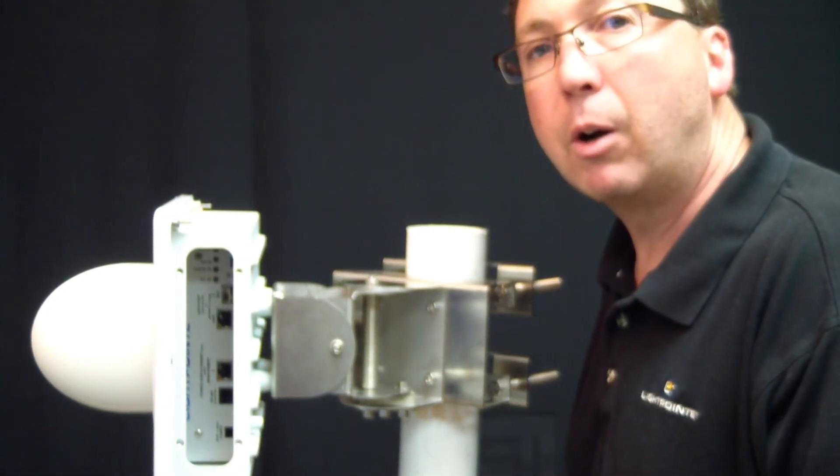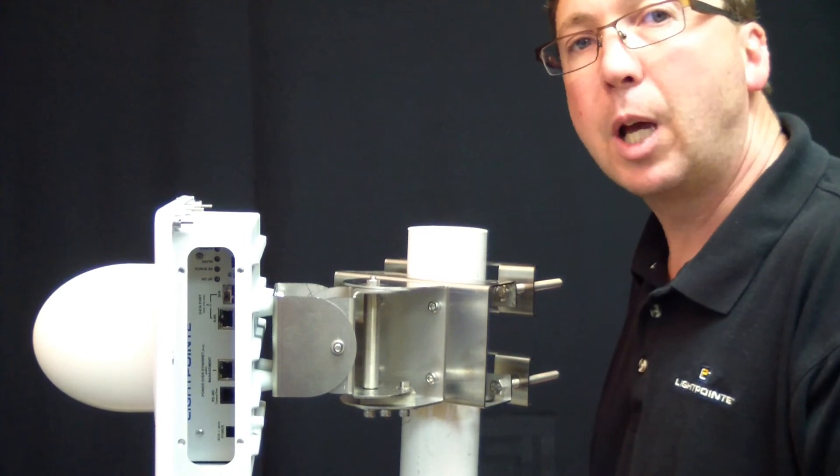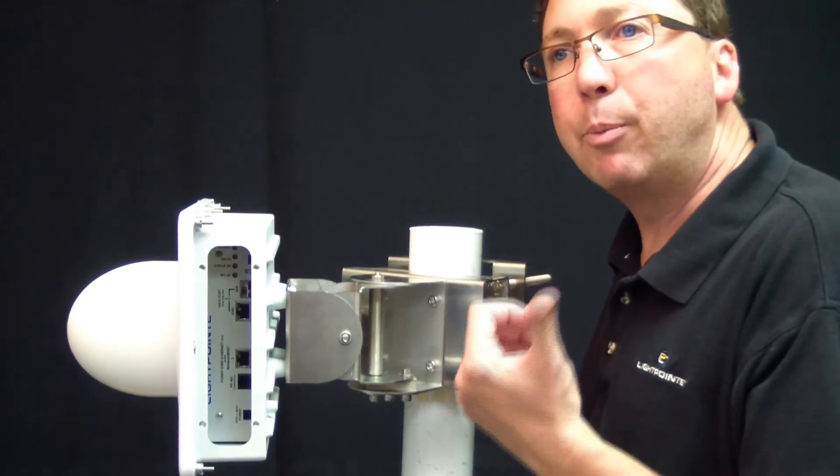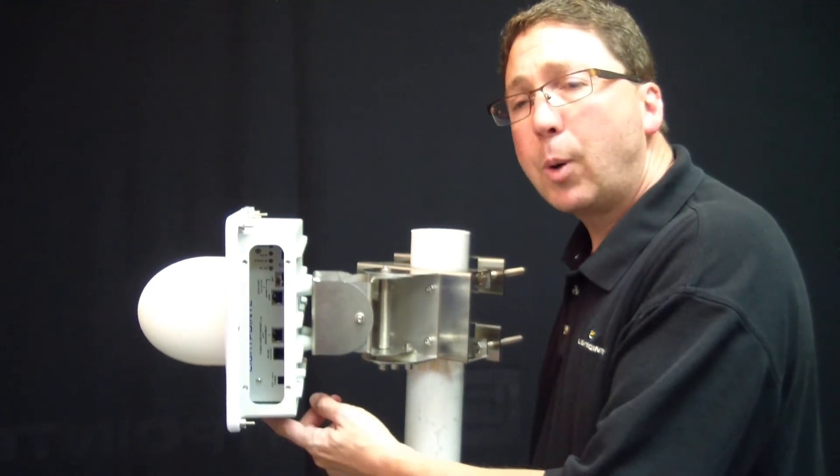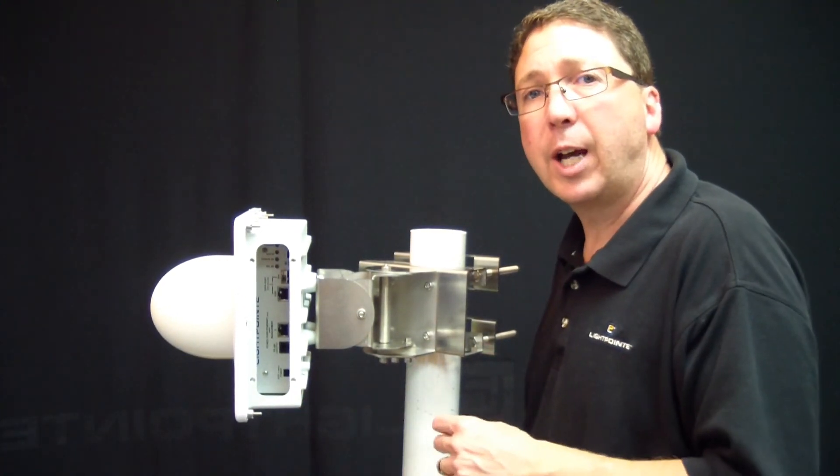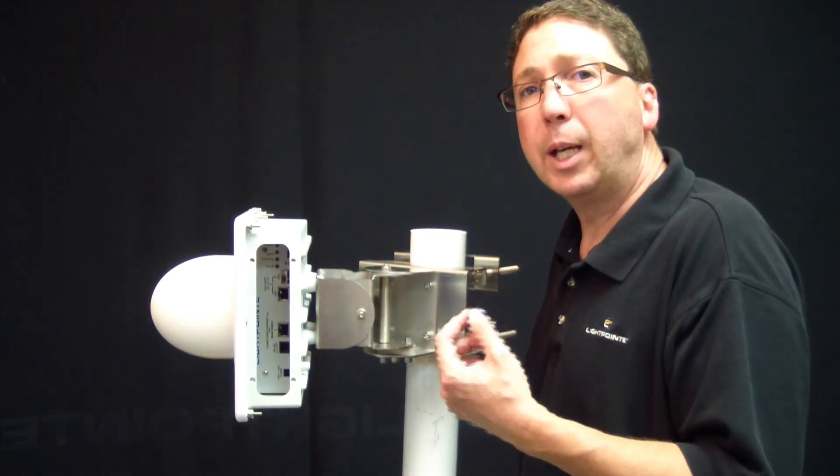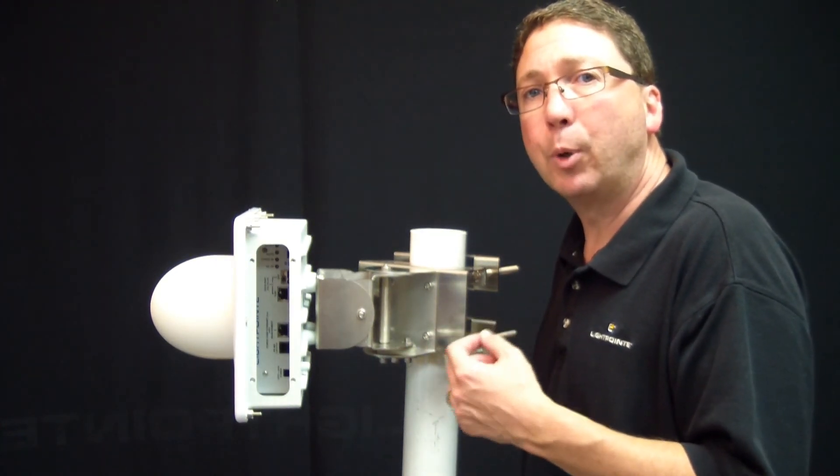And while it may not be easy to see, down below is our RSSI connector. So during the alignment process, you have both your alignment tool that I showed you earlier, but you also have a connection for RSSI to voltmeter in order to be able to use that for proper alignment.